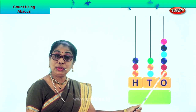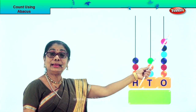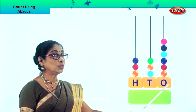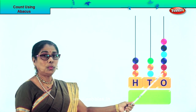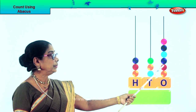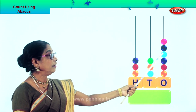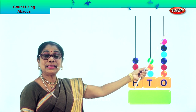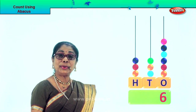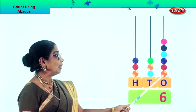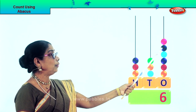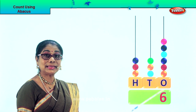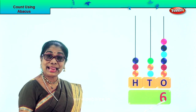We will count the 1s in the 1s place. Look at the abacus here — count the beats: 1, 2, 3, 4, 5, 6. How many beats in the 1s place? 6. So we write down 6 in the 1s place.